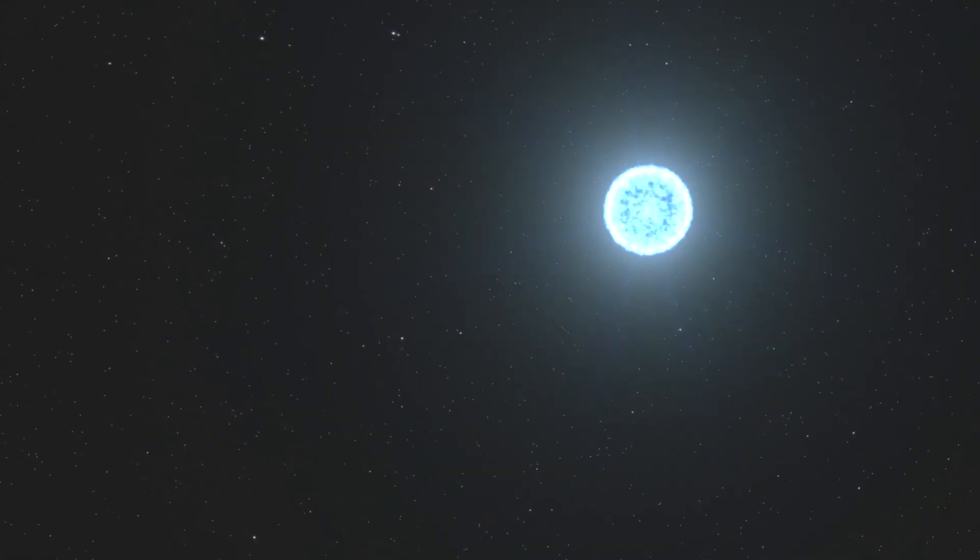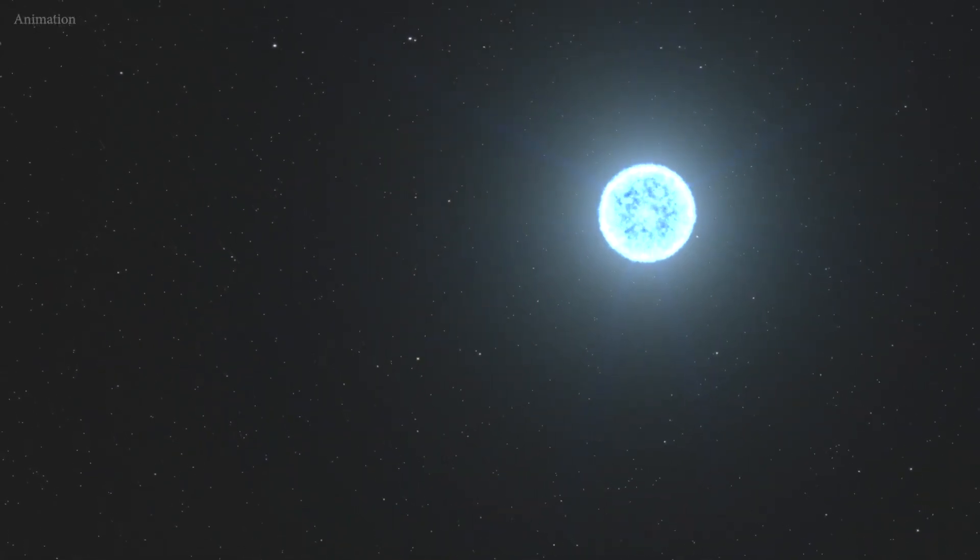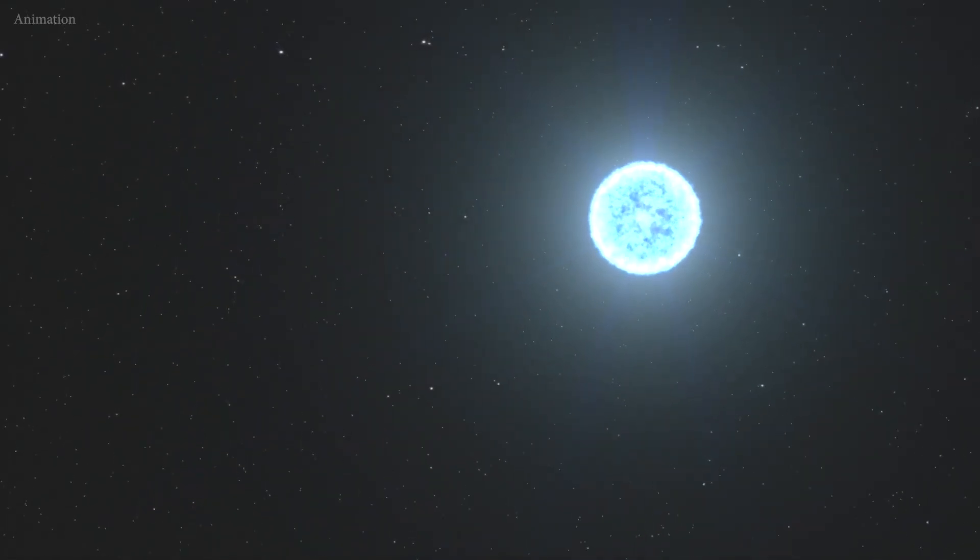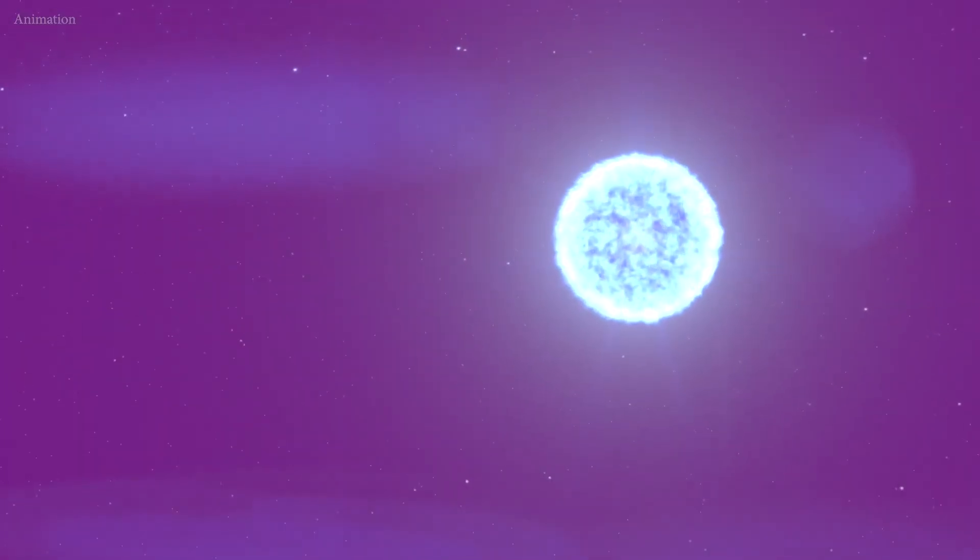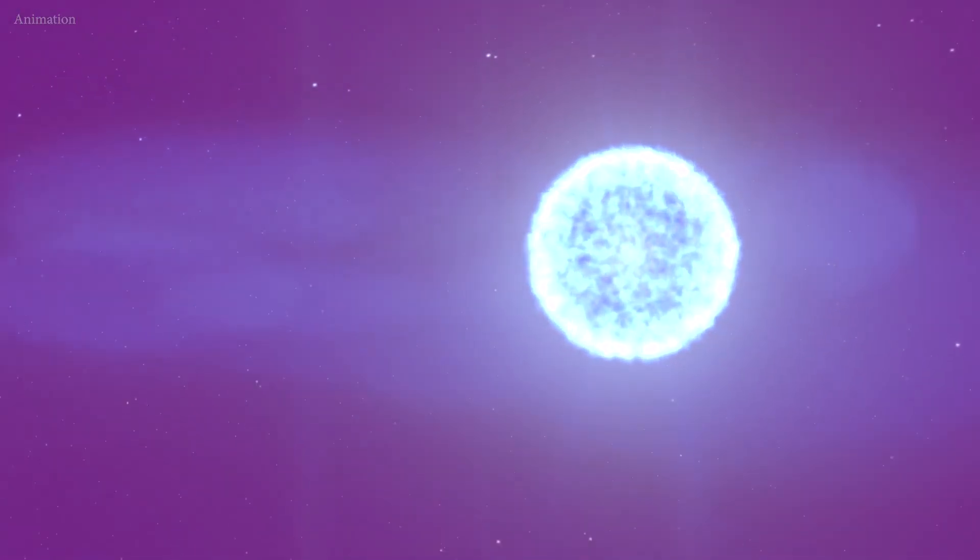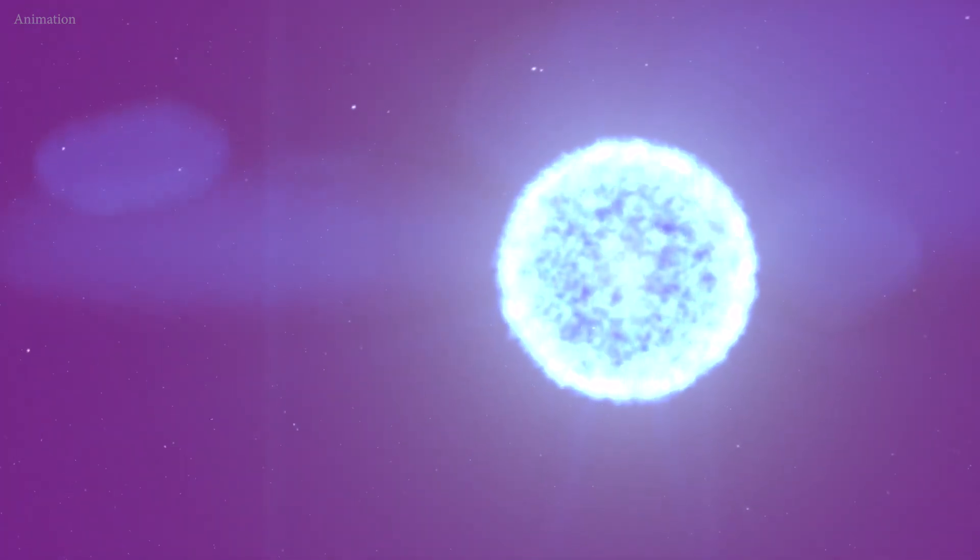The white dwarf is 128 light-years away and 20% more massive than the Sun. In visible light, it looked like a typical white dwarf, but Hubble's ultraviolet data revealed something unusual: evidence of carbon in its atmosphere.